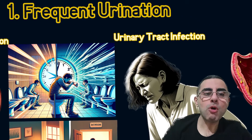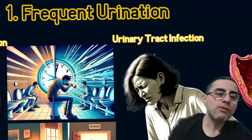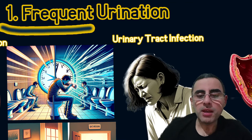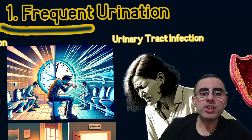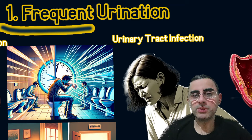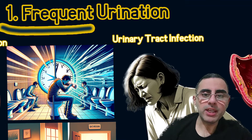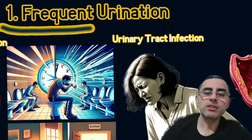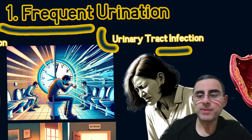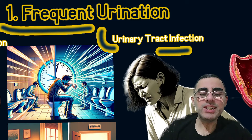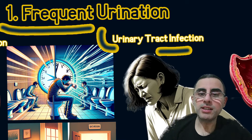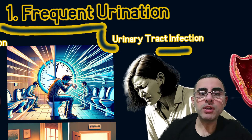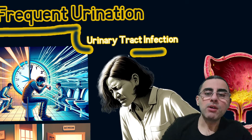The most common symptom of kidney dysfunction is frequent urination. Frequent urination is most commonly caused by intake of lots of water, which is normal. The second most common cause is urinary tract infection, during which the kidneys can be involved or it can happen without kidney involvement.